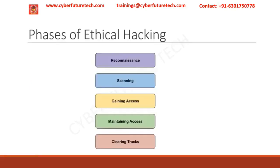Phases of ethical hacking — the first phase is reconnaissance. This is where the hacker collects all information about the target, also known as the preparatory phase. The hacker collects basic information like old passwords, employee IDs, then finds specific IP addresses and identifies vulnerabilities.